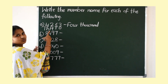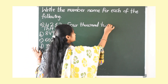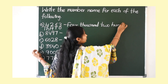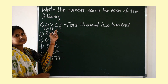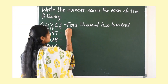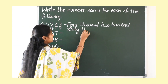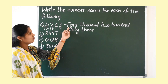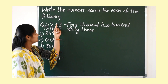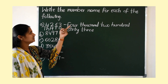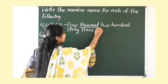Next, 2 is in the 100's place, so write 200. Then 6 tens make 60, and 3 ones make 3. So the number name is four thousand two hundred sixty-three.